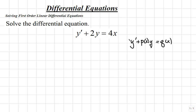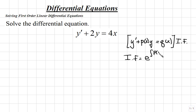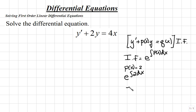To solve this type of equation, we'll multiply both sides by an integrating factor, which we'll label as i.f. This integrating factor is found by the formula e raised to the integral of p of x dx. Comparing our equation to this general equation, we see that p of x must equal 2. So since p of x equals 2, plugging this into our integrating factor, we would have e raised to the integral of 2 dx. Integrating 2 dx becomes e raised to the 2x. So our integrating factor will be e raised to the 2x.